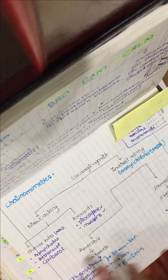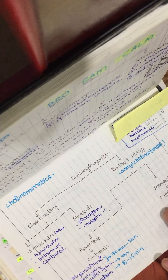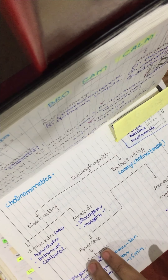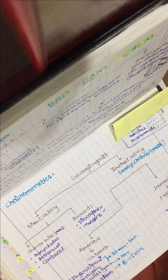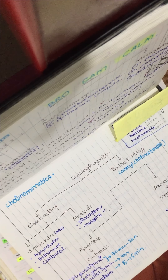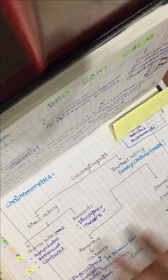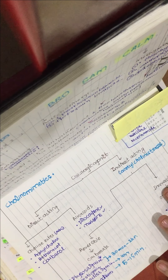The indirect acting drugs are divided into reversible and irreversible. The reversible ones contain the carbamates: physostigmine, neostigmine, pyridostigmine, edrophonium, and erythrostamine.